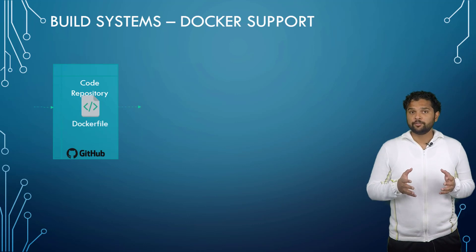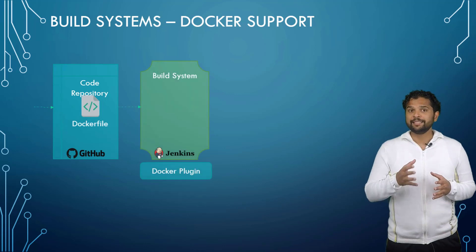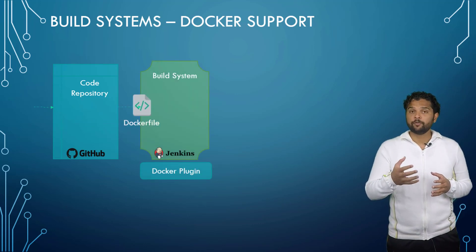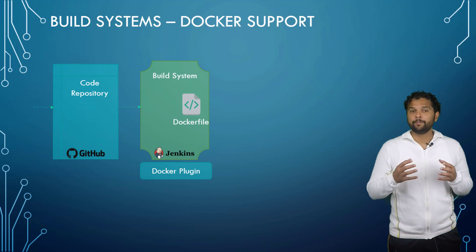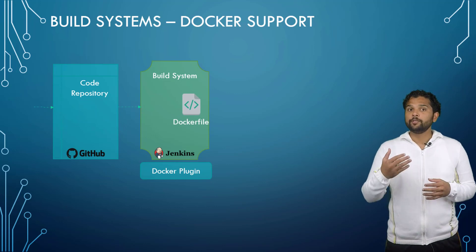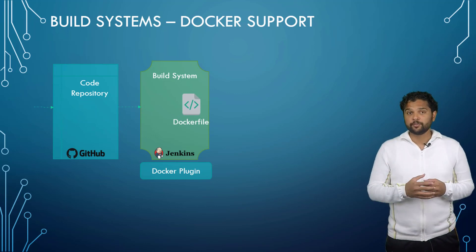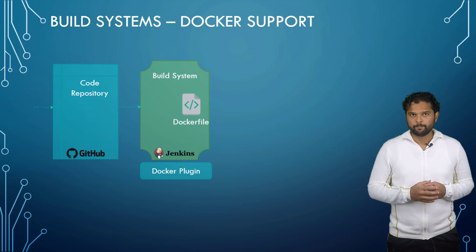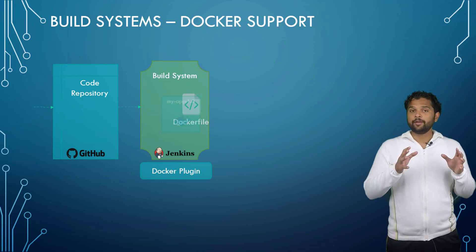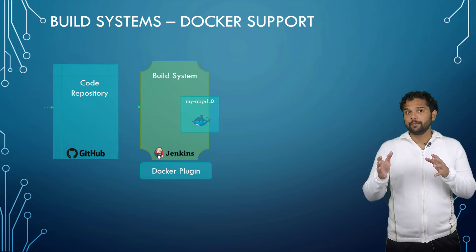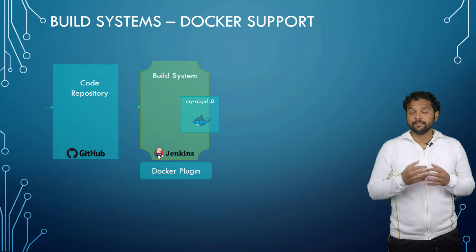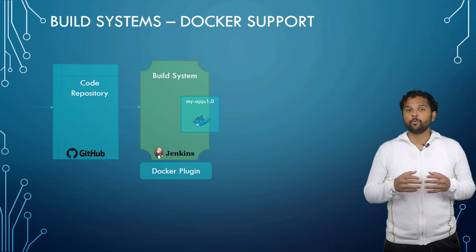Once checked in to GitHub, Jenkins pulls the code and uses the Dockerfile as part of the code to build the Docker image. You may use a supported Docker plugin for this purpose. On building the new Docker image, Jenkins will tag the image with a new build number — in this case, 1.0.